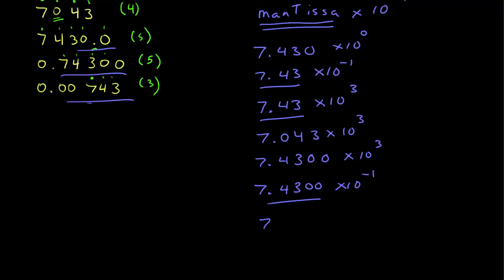And finally, this one would be 7.43 times 10 to the minus 3: 1, 2, 3. So again, in scientific notation here, the mantissa has all of the significant digits.